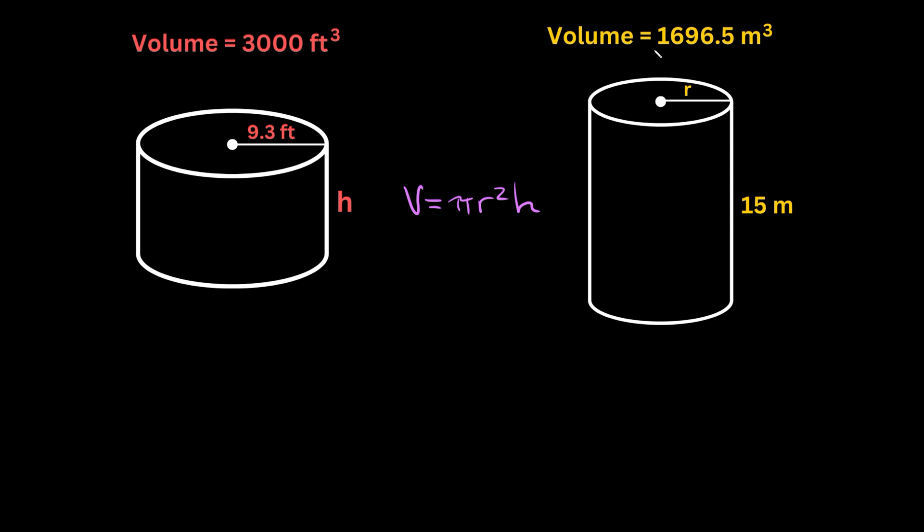So plugging in what we know, we know the volume, so that's 1696.5, and that's equal to pi times the radius, which we don't know, so that'll stay as the radius squared. And the height we do know this time, that's 15 meters right there. So here we're going to get that 1696.5 is equal to, we can multiply these two together, 15 and pi,